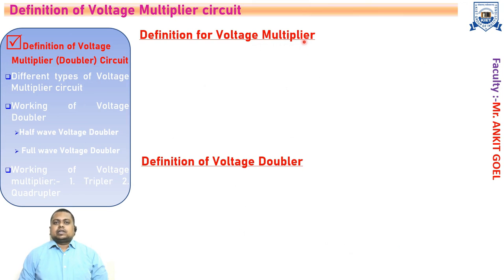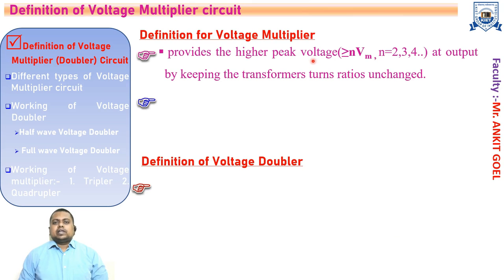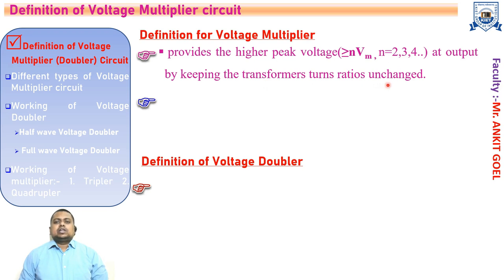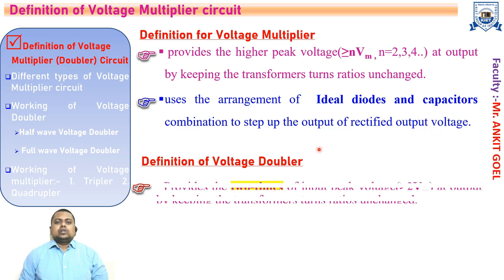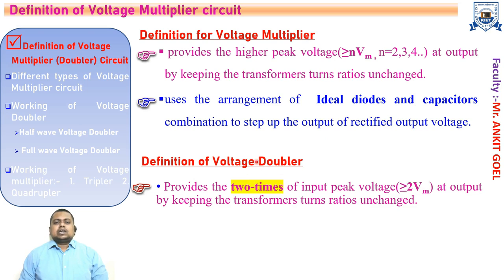Let us start with the voltage multiplier circuit. A voltage multiplier circuit is a circuit which will provide the output voltage as n times the input peak voltage. When n equals 2, the voltage multiplier is said to be a voltage doubler; n equals 3 is a voltage tripler; and n equals 4 is a voltage quadrupler. The transformer turns ratio remains unchanged. Basically, any voltage multiplier consists of ideal diodes and capacitors combination to step up the rectified output voltage.